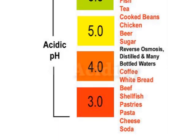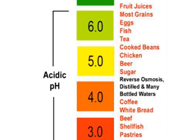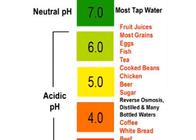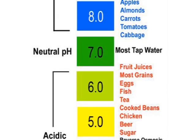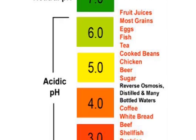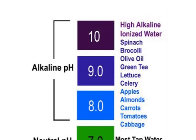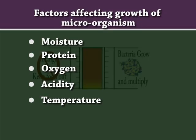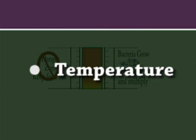Acidity: most microorganisms prefer food which is slightly acidic or neutral. If food is too acidic or too alkaline, microorganisms cannot grow. Temperature: most bacteria grow best around body temperature but will grow over a wide range of temperatures.